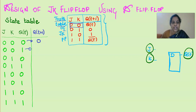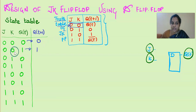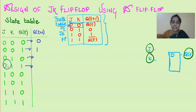Coming to the second row, here also J and K equal to 0, 0 but the previous state is 1. So according to this truth table, the previous state should come as the next state if J, K equal to 0, 0. Similarly, we need to develop the next state for each and every row.